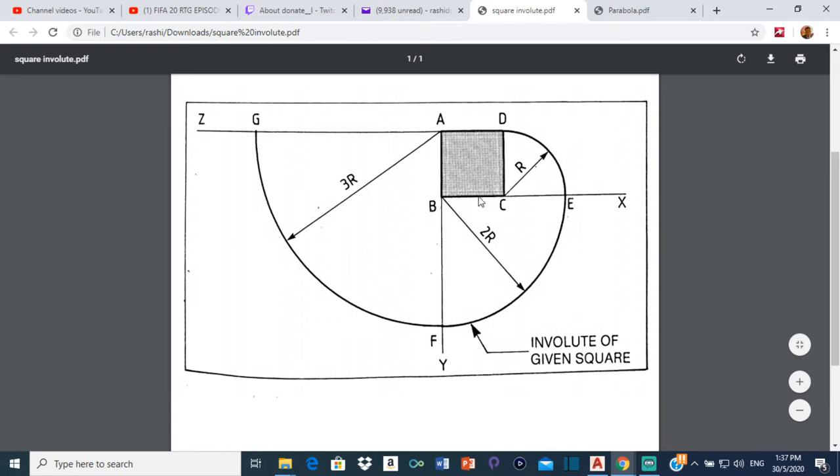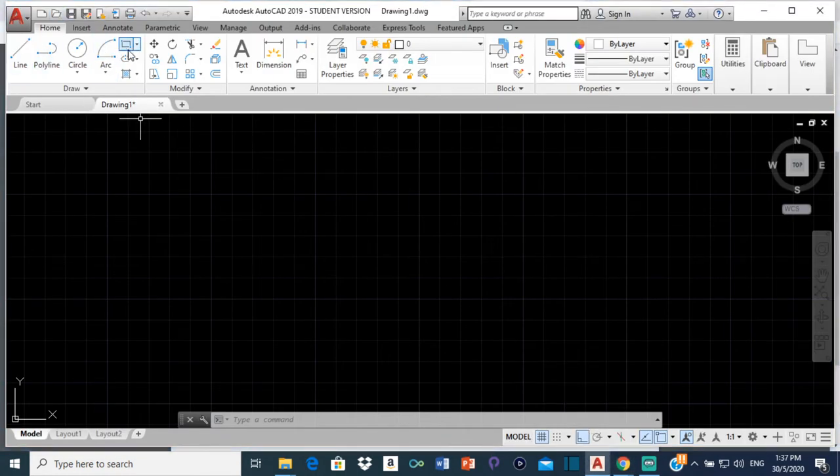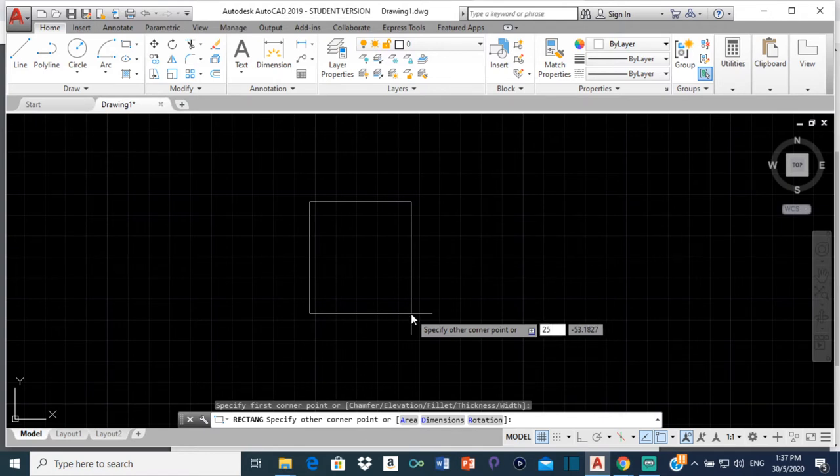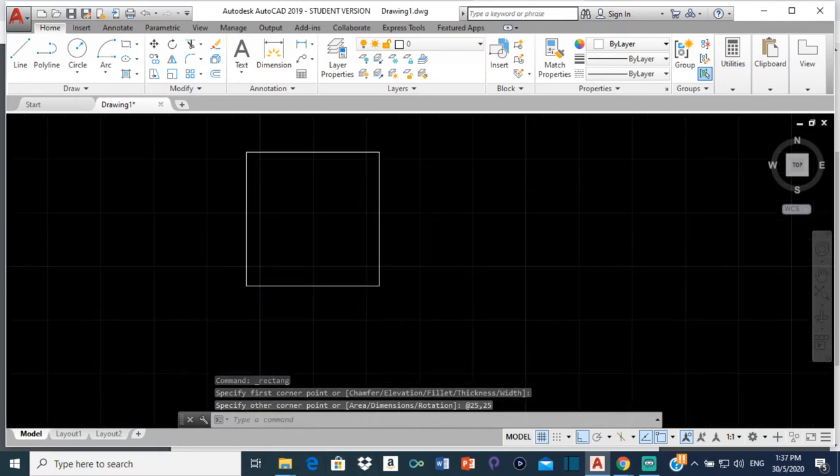So we are going to start with the square and we are going to make the sides of the square 25 millimeters. So let's do that. We can select a rectangle right here or you can type rectangle. Click a place to start and then type 25, comma, 25, enter. And here we have our rectangle.